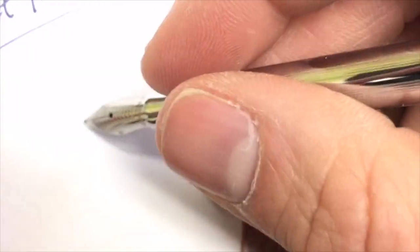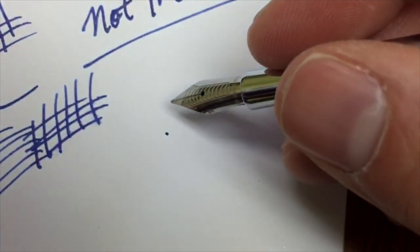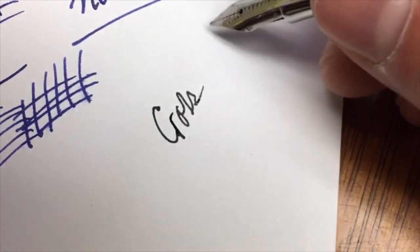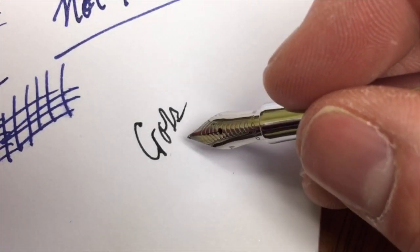I think it just needs to be broken in a little bit here because I feel like it's getting better as I'm writing with it. Either that, or just at the very start of the ink flow, it doesn't have enough ink coming out of that tip.